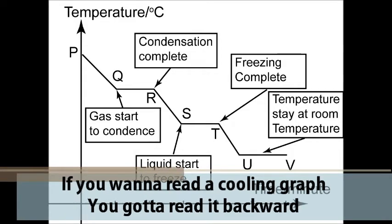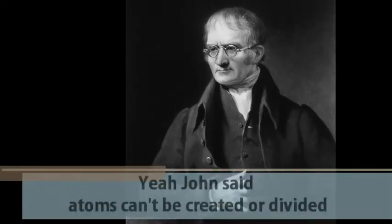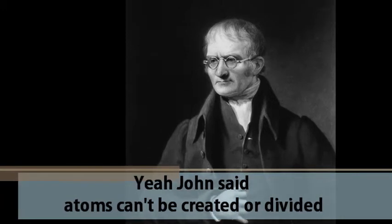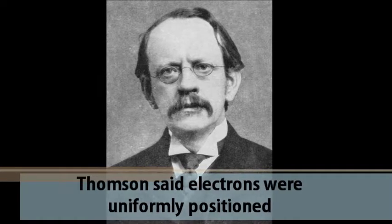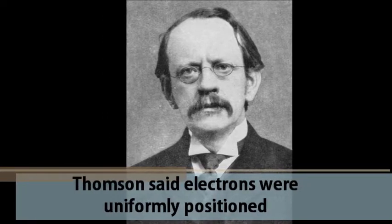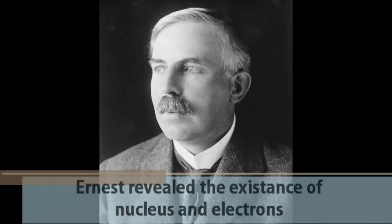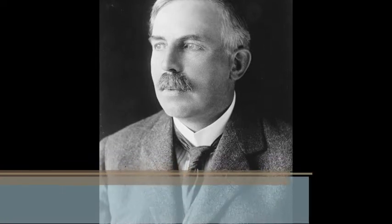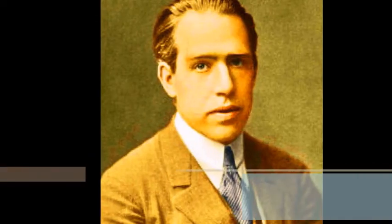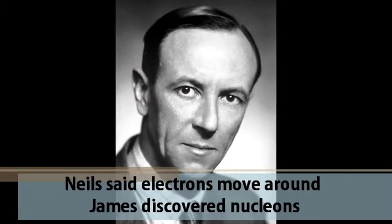If you wanna read the cooling curve, you gotta read it backward. Yeah, John say atoms can be created or divided. Thompson say electrons were uniformly positioned. Ernest revealed the existence of nucleus and electrons. Niels say electrons move around. James discovers the nucleus.